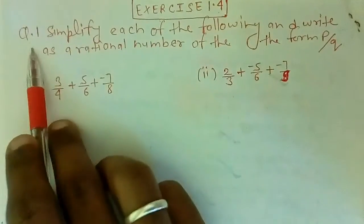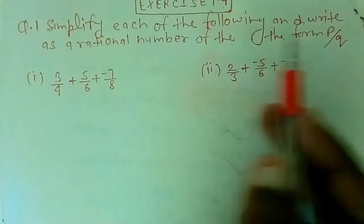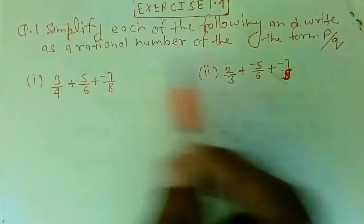Exercise 1.4, question number one: simplify each of the following and write as a rational number.